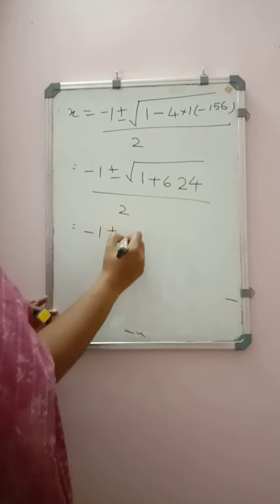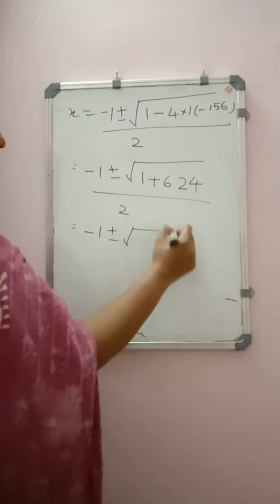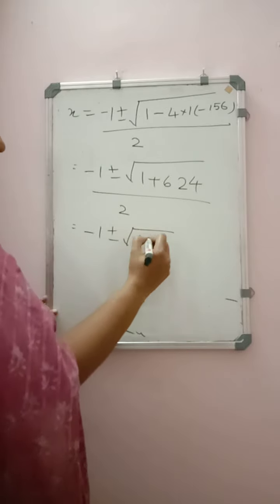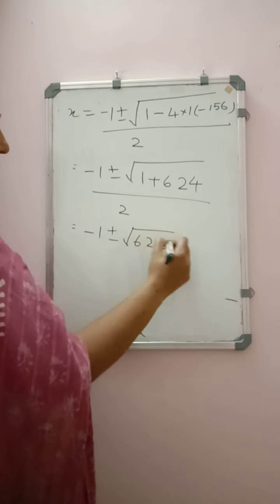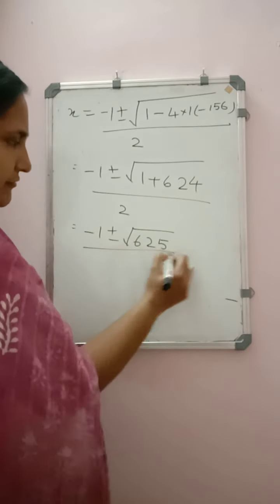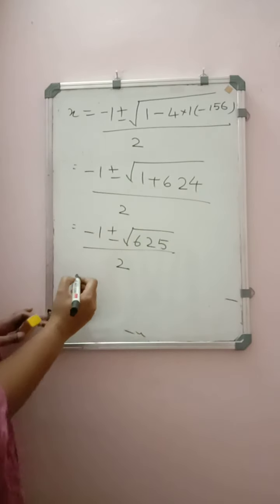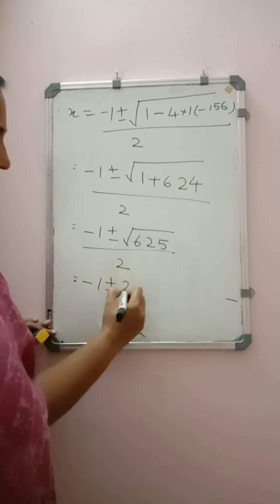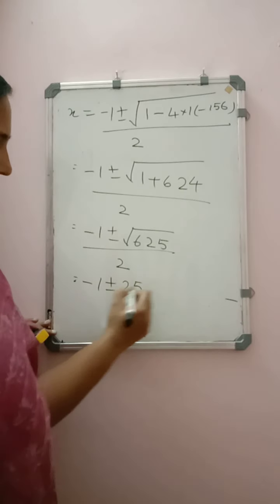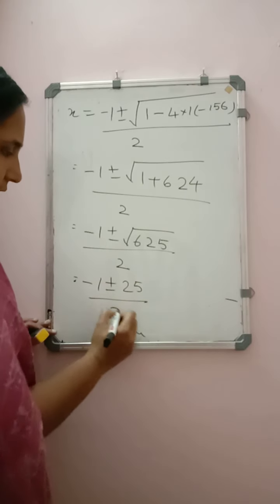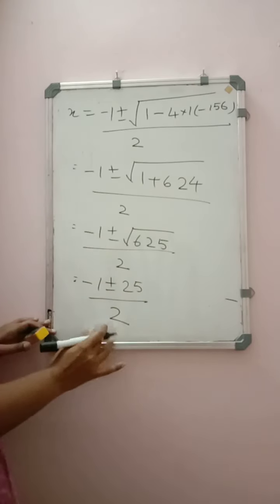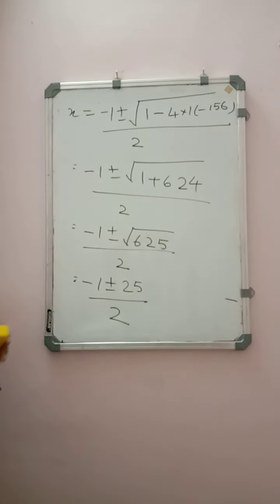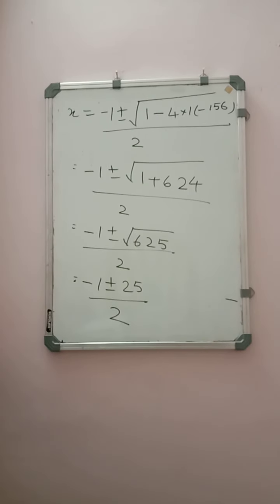So we get −1 ± √625 / 2. We know that √625 = 25 / 2. First we take the positive and negative signs separately.